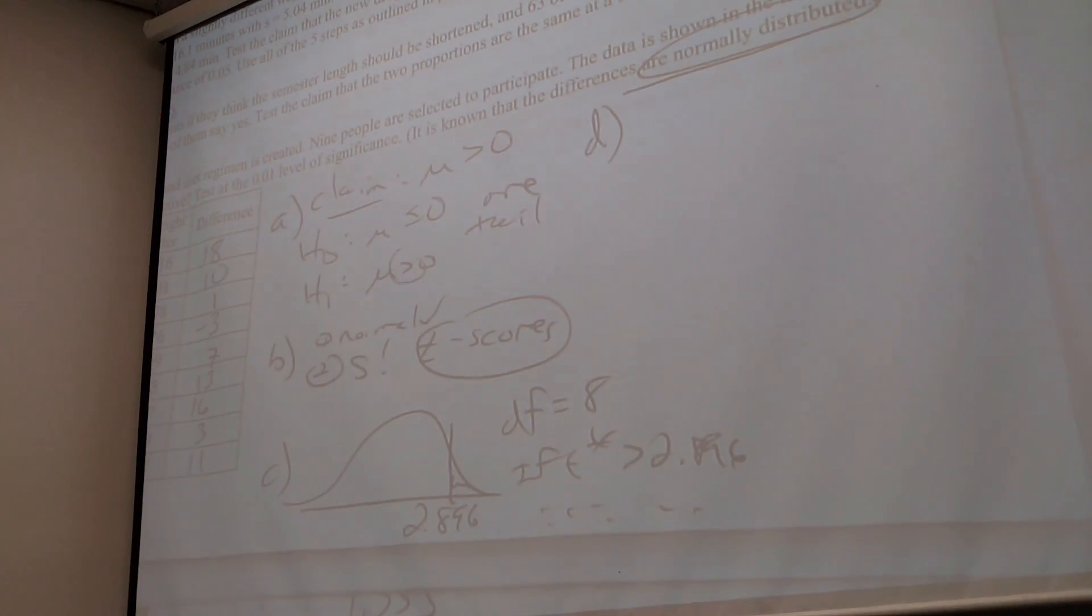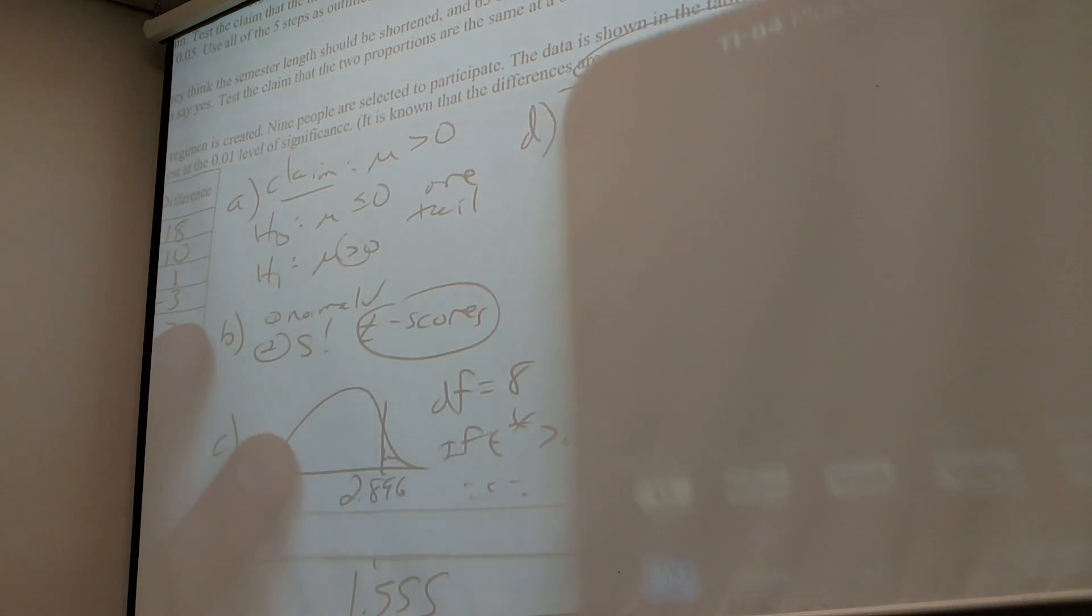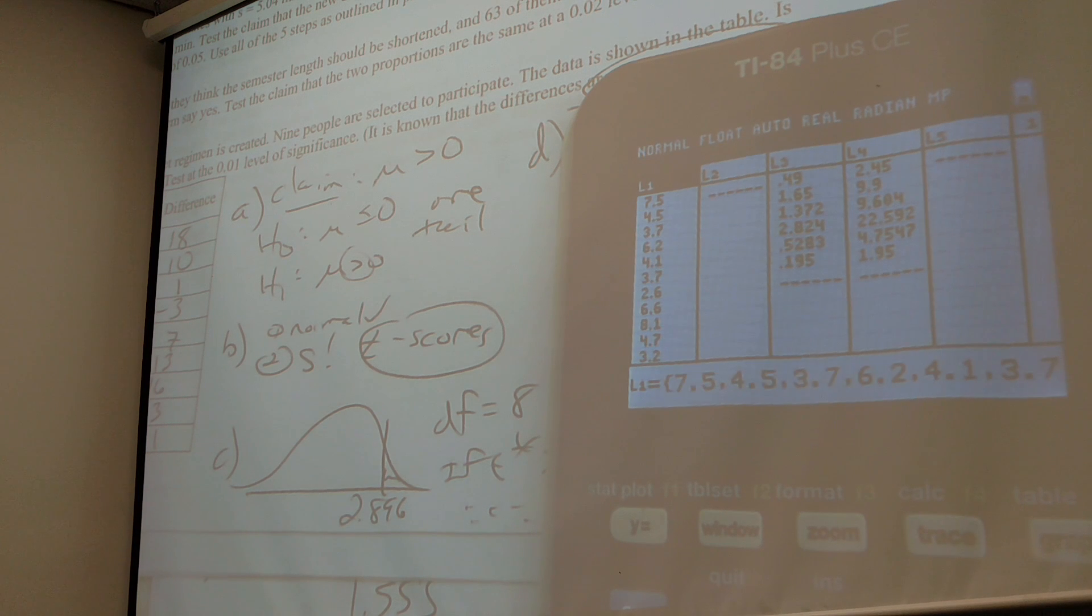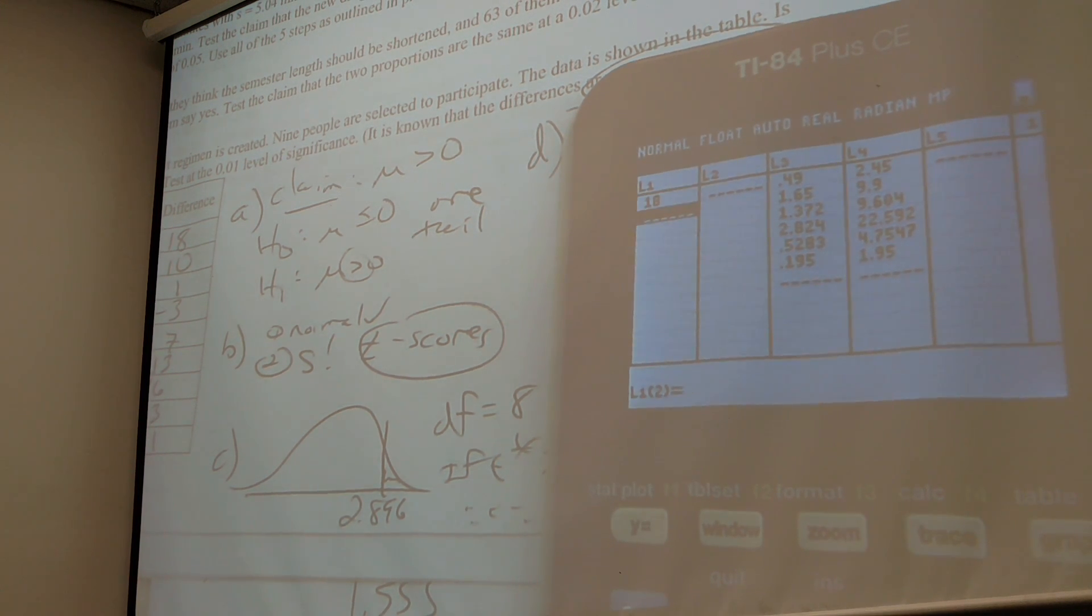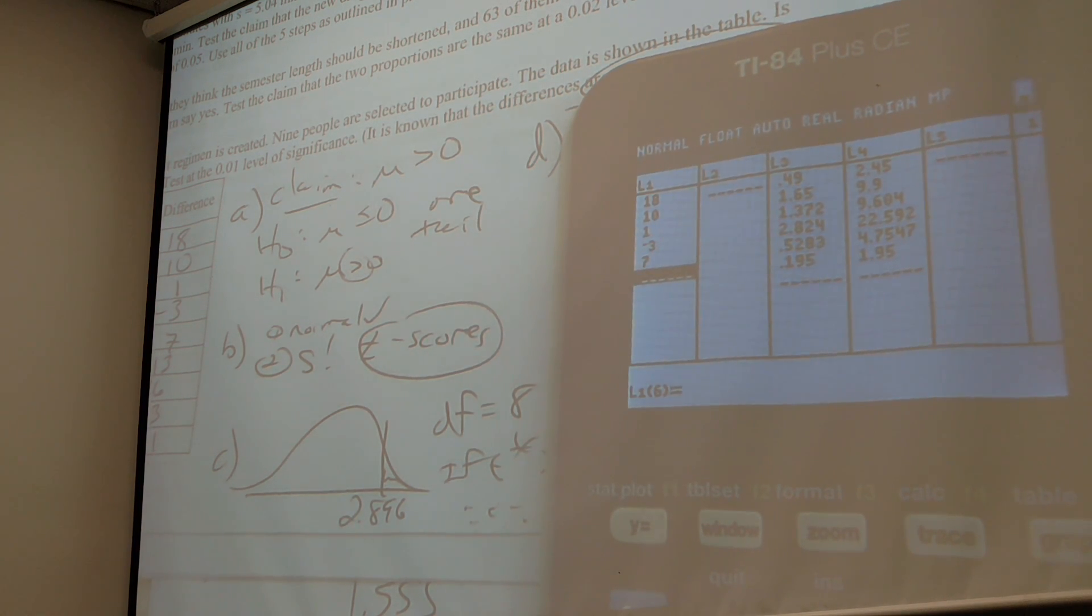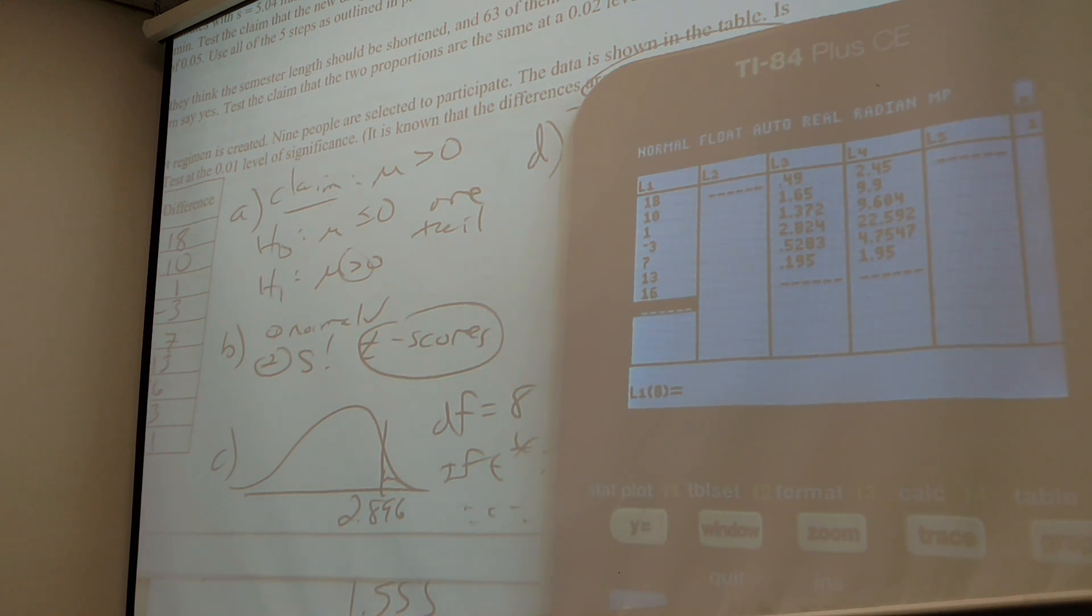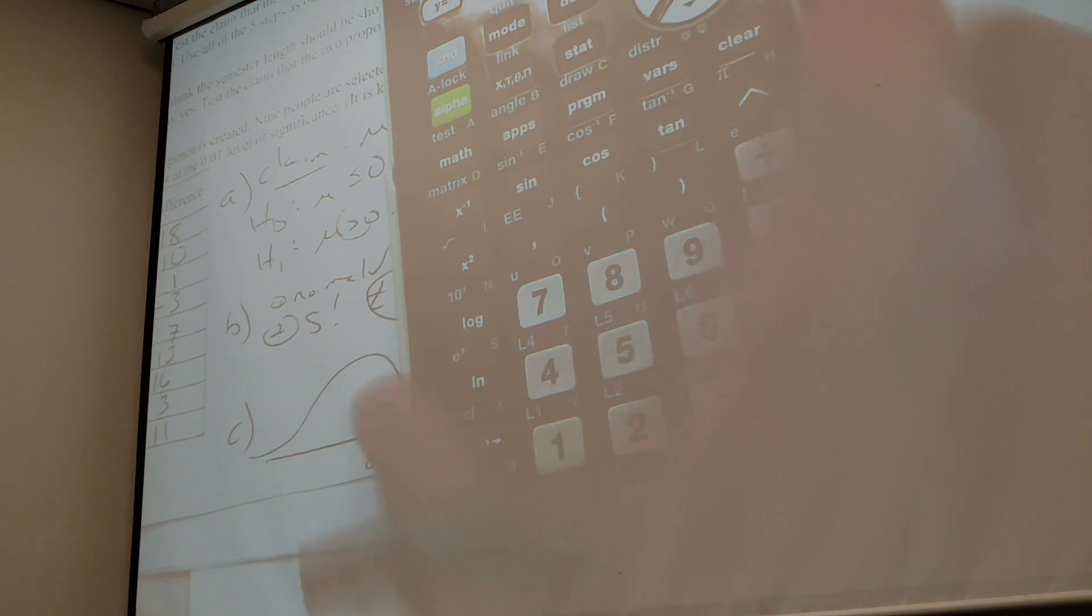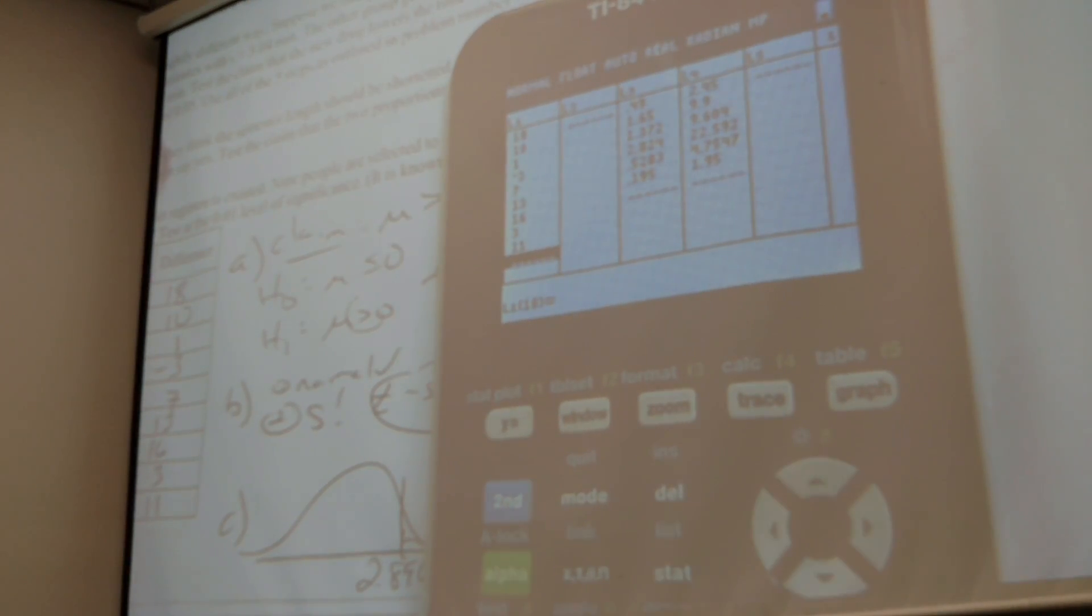So now I have to put into list one my data, right? So let's see. Let me just use my calculator here. Let me just record. Hopefully everybody realizes there's a negative key and a minus key. If you use the wrong one, your calculator will have a pissy fit.